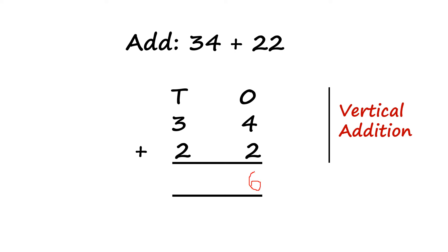Now let us see this. 3 plus 2. So my answer is 5. So my total is 56. So 34 and 22 is add-in. And 56 is the sum or the total.